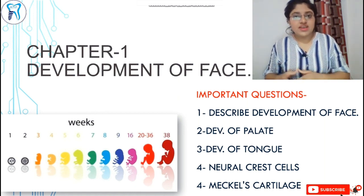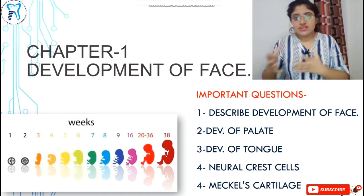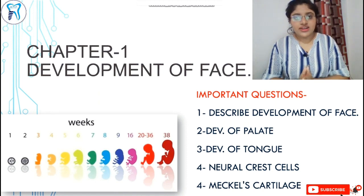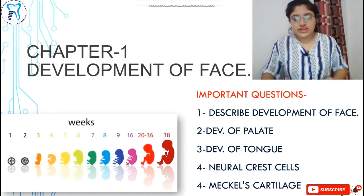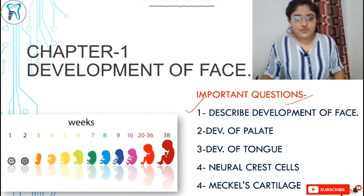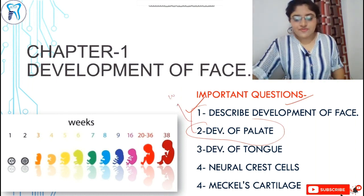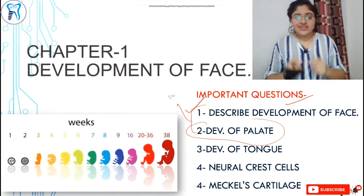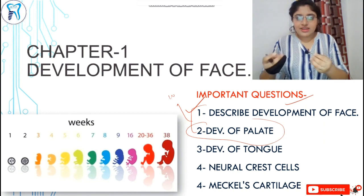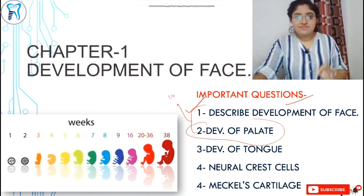The first question is: describe the development of the face. Second question: development of the palate — soft palate and hard palate. Third question: development of the tongue. Fourth question: neural crest cells. And fifth: Meckel's cartilage. These 5 questions in this chapter are very important. Development of the face is a direct 10-mark question. You can also get a combined 10-mark question covering development of the face plus development of the palate. Remember, always include diagrams in every question — even a rough diagram helps you gain maximum marks from the examiner.